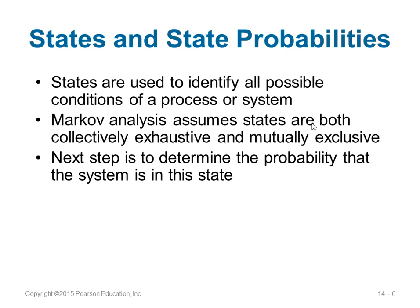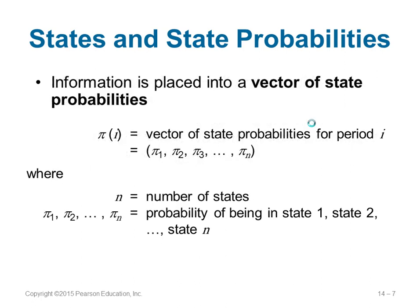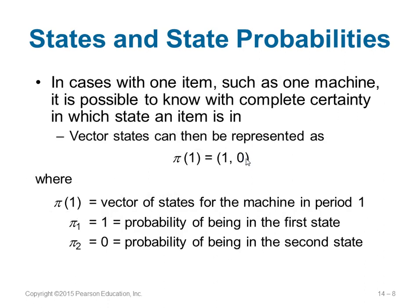Markov analysis makes the assumption that all states given are collectively exhaustive and mutually exclusive. The next step is to identify the probability of being in a state, placed in what is called the vector of state probability. Phi of period i equals pi 1, pi 2, pi 3, until pi n. So you represent the probability of being in state 1 as pi 1, state 2 as pi 2, until state n.